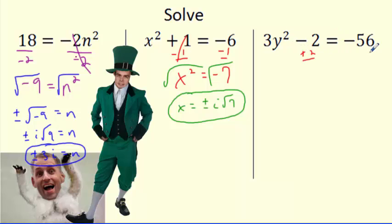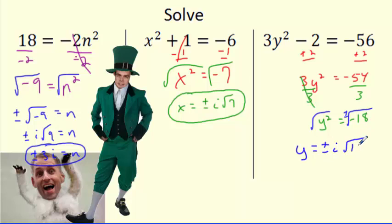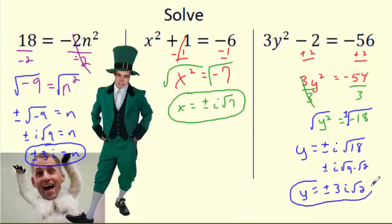One more: try to get y squared by itself. Add 2 to both sides: negative 56 plus 2 is negative 54. Divide both sides by 3, giving y squared equals negative 18. Square root both sides — instantly plus or minus. Take the i out: plus or minus i radical 18. Since 18 equals 9 times 2, the square root of 9 is 3. The answer is plus or minus 3i radical 2.